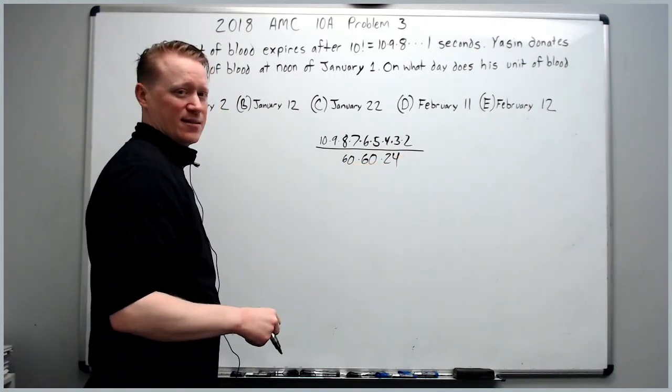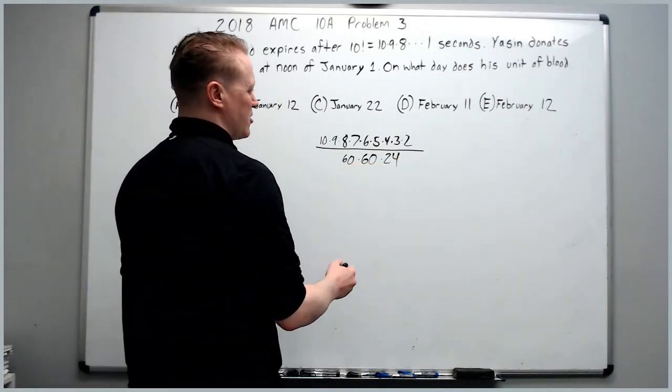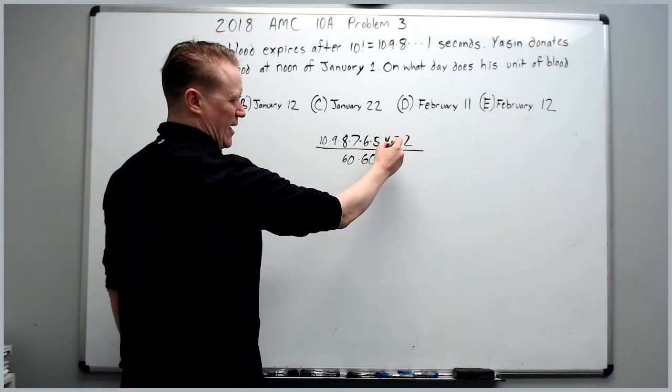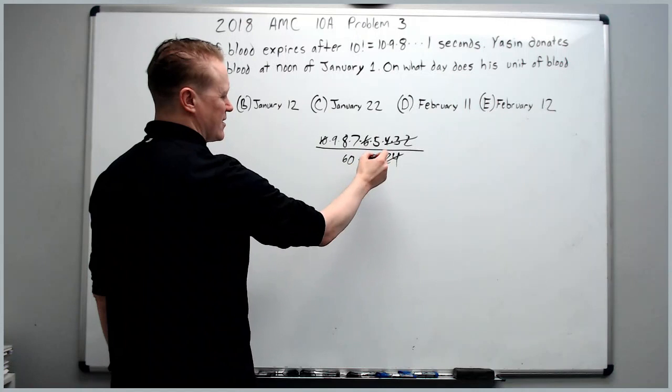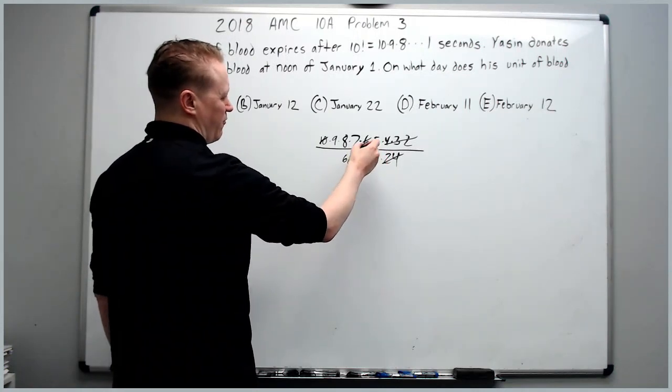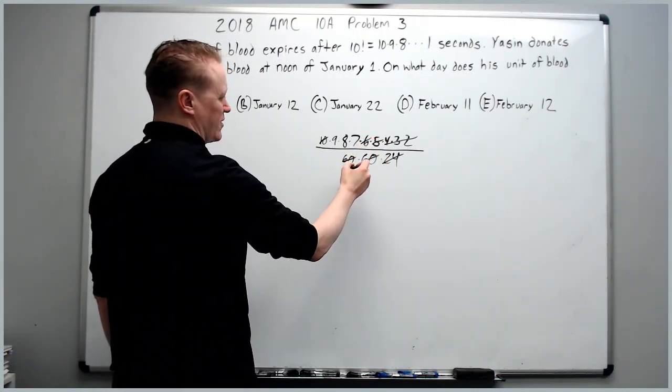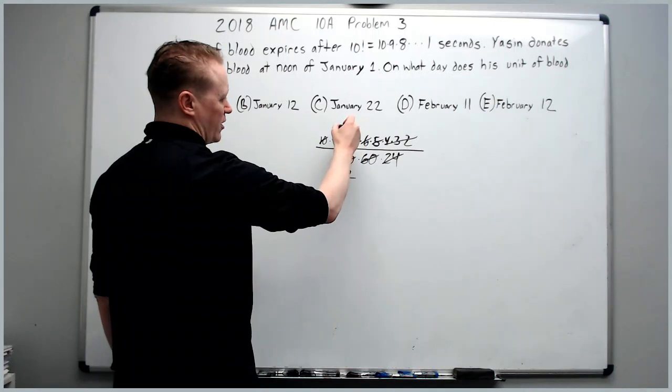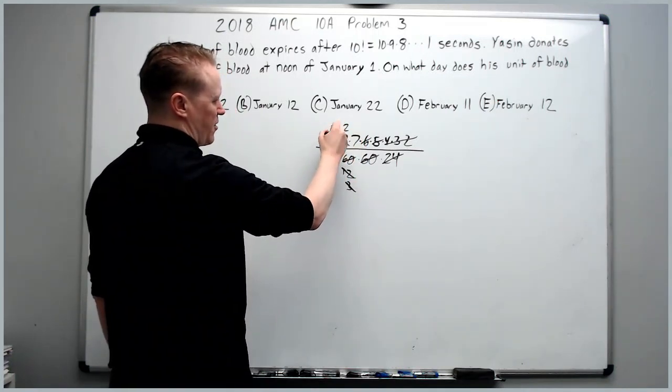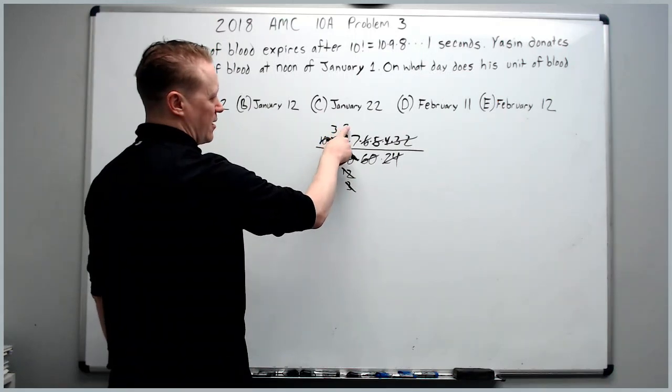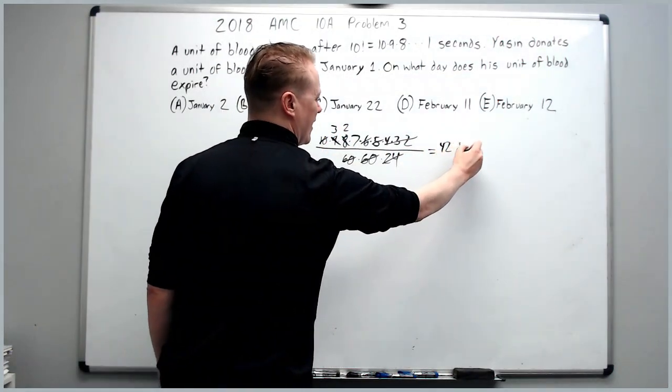This now represents the number of days. So 4 factorial, which is the last 3 here, is 24. We can cancel that. 6 and 10 make 60. 5 goes into 60 12 times. 4 goes into here twice and here 3 times. 3 goes into 9 3 times. And you get 3 times 2 times 7 is 42 days.